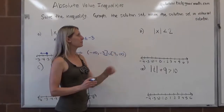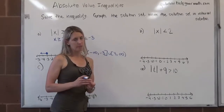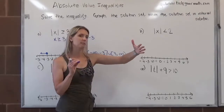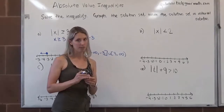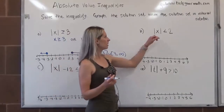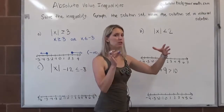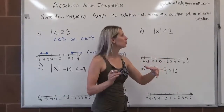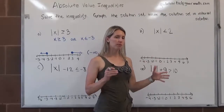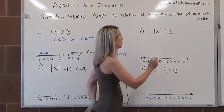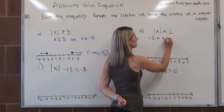For letter B, we have the absolute value of x is less than 2. This is a less than, which means it needs to be closer than 2 units from 0 on the number line. When we see a less than and the variable is on the left, we're talking about a conjunction — it needs to meet two requirements: less than 2 and also greater than negative 2. We can represent those in one compound inequality: negative 2 is less than x is less than 2.